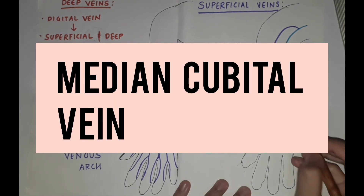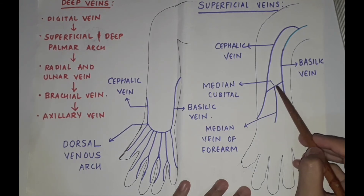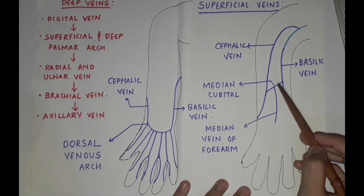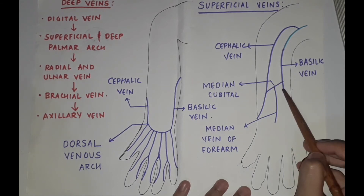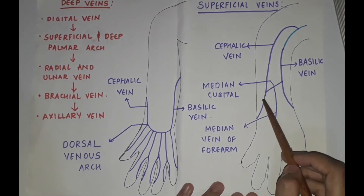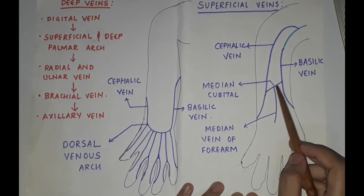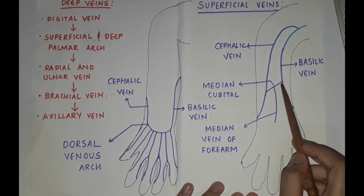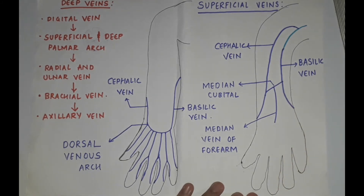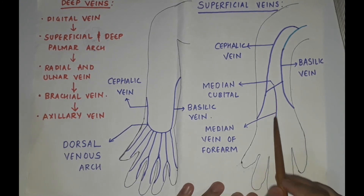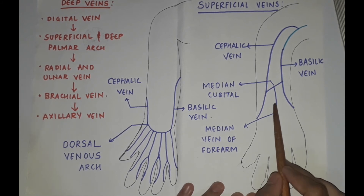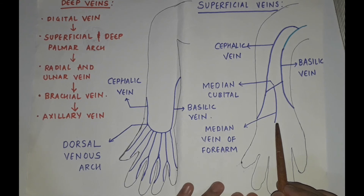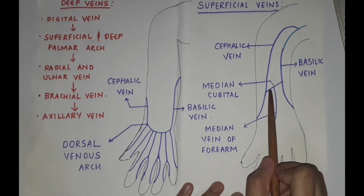Median cubital vein. It is a large communicating vein which shunts blood from the cephalic vein to the basilic vein. It begins from the cephalic vein and runs obliquely upwards and medially to end in the basilic vein. It is separated from the brachial artery by the bicipital aponeurosis. It may receive tributaries from the front of the forearm through the median vein of the forearm and is connected to the deep vein through the perforator vein. The median cubital vein is an ideal choice for intravenous injections.